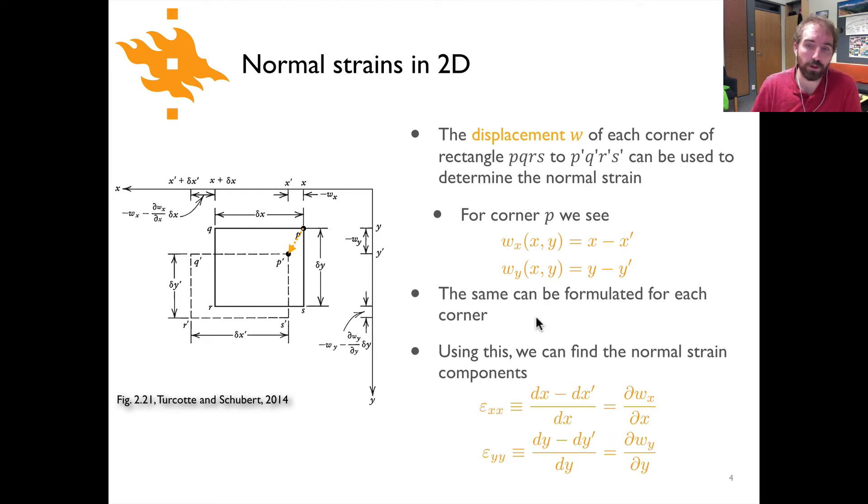So of course, yes, you can calculate the same thing for all four corners, and if you go through this and do a little bit of mathematical rearrangement, you come up with normal strain components epsilon_xx and epsilon_yy that look like this, where epsilon_xx is simply dx minus dx prime divided by dx. So again, it's something that's of the form, the change in length divided by the original length, or if you prefer, you can put this in terms of the displacements and have dwx divided by dx. Of course you can say exactly the same thing along the y-axis. And if you're curious about this, the Turcotte and Schubert textbook goes through the full derivation of how to do this calculation.